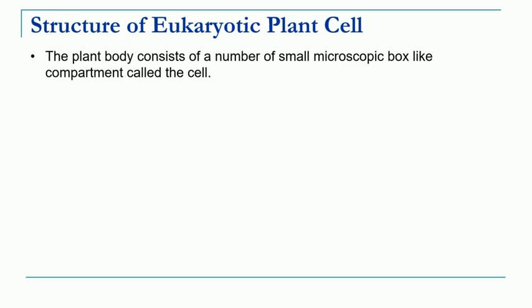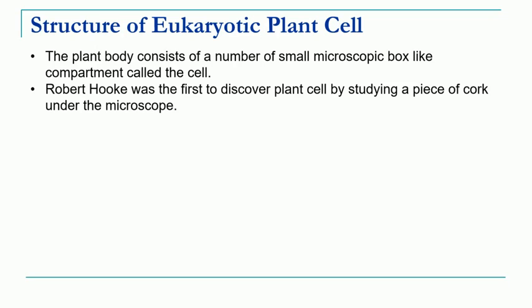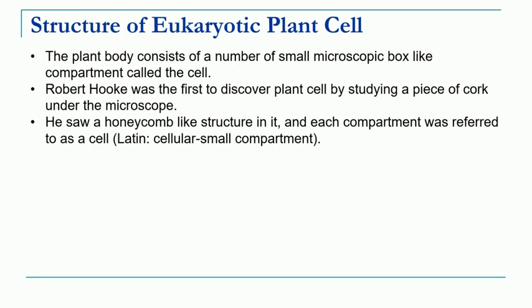Now let's begin with the ultrastructure of the eukaryotic plant cell. The plant body consists of a number of small microscopic box-like compartments called cells. It was Robert who was the first to observe the plant cell. He was studying a piece of cork under the microscope — cork is used to bottle wine bottles. A section of this cork was taken, and when he observed it under the microscope, he could observe compartment-like structures which he called cells. These honeycomb-like structures he saw under the microscope were referred to as cells. In Latin, 'cell' or 'cellula' means small compartments.